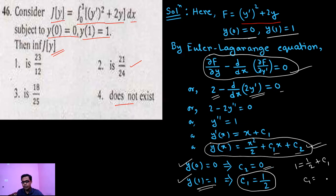Now we have to find out the infimum of j[y]. So what is our final extremal? Final extremal y(x) equals to x²/2 and c₁ equals to half, so plus x/2. That is half into (x² plus x). This is our y(x).